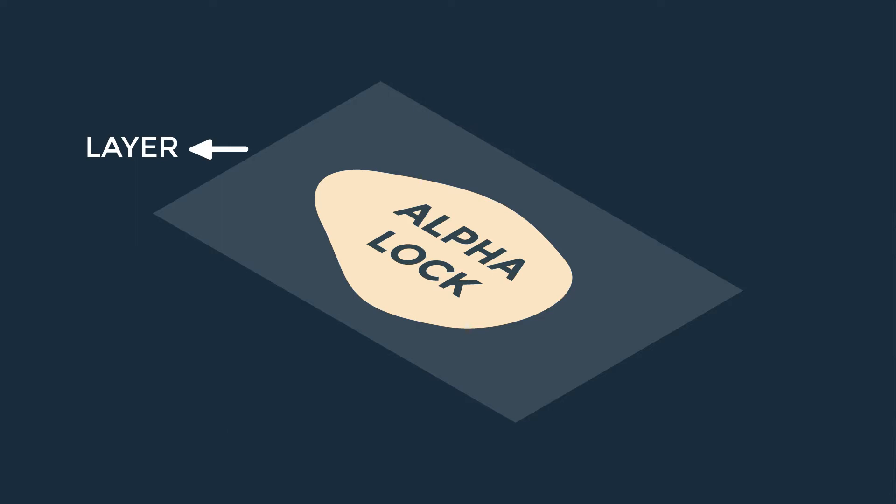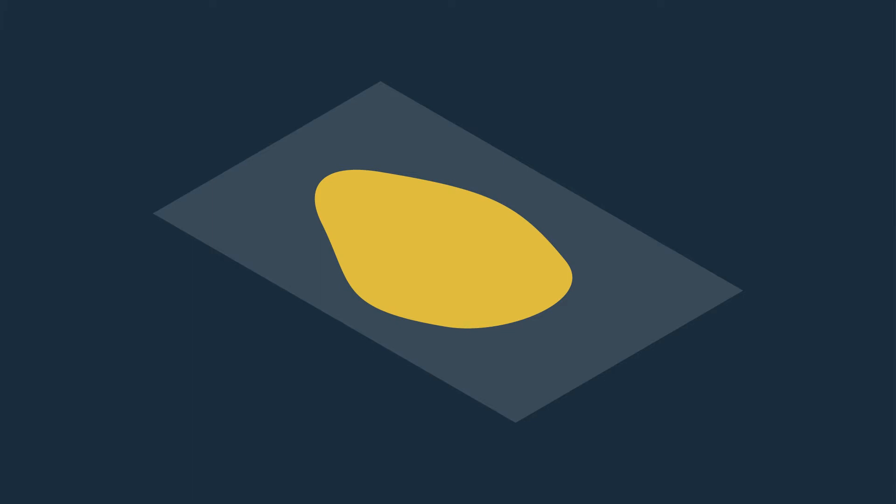Imagine if you're working on a shaky train — wouldn't it be nice not to draw outside of the defined boundary every time the train wobbles? So that's the point of Alpha Lock. Over here you will see a layer with an area painted in beige color with the text Alpha Lock on it. The entire area is considered painted.